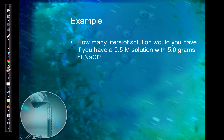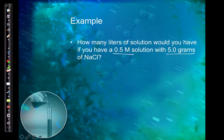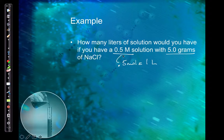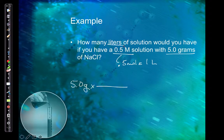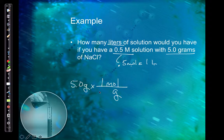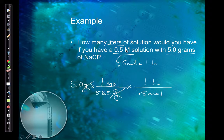How many liters of solution would you have if you have 0.5 moles per liter with 5 grams of sodium chloride? We have a molarity and a mass — molarity is a conversion factor, so 0.5 moles equals 1 liter of solution. Start with 5 grams, convert to moles: 1 mole of sodium chloride is 58.5 grams. Then convert to liters using molarity: 1 liter equals 0.5 moles. That gives me 0.17 liters.